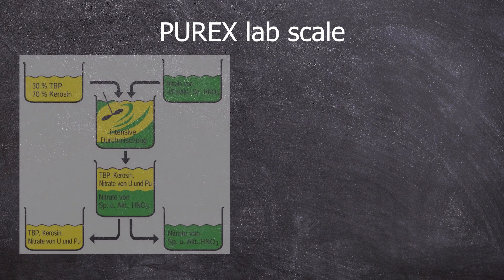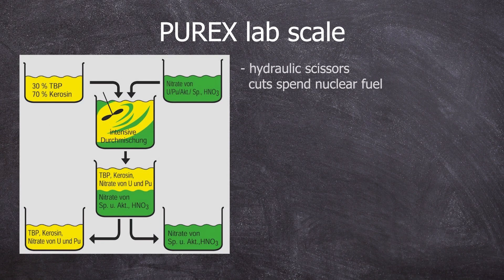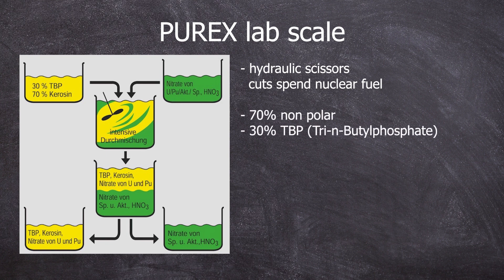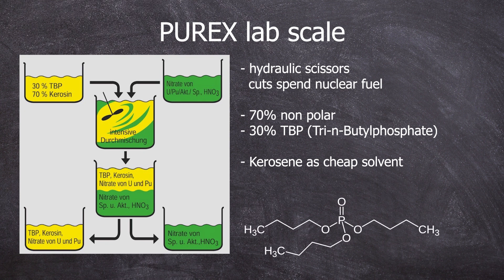In the context of the PUREX process, the following is done. The fuel rods are chopped by a very powerful hydraulic shear and fall into hot concentrated nitric acid — everything dissolves in it. Then a mixture of 70% kerosene and 30% TBP is added. Kerosene is a very cheap non-polar solvent in the industry, and non-polar things don't dissolve in nitric acid. TBP, or tri-N-butyl phosphate, as its structure suggests, has a non-polar part and a more polar phosphate part.